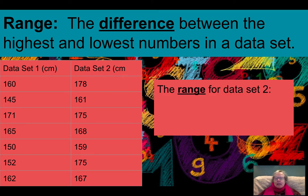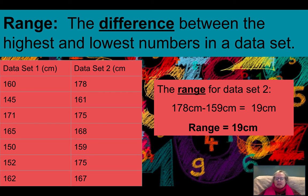So let's look at the range for data set 2. And we know from when we looked before that the highest number is 178 and the lowest is 159. So we subtract those and we get 19. And so the range is 19 centimeters. Great.